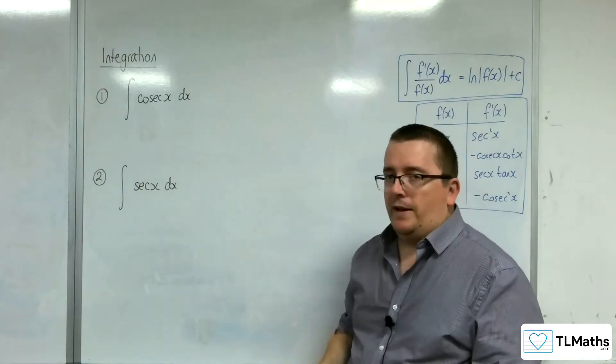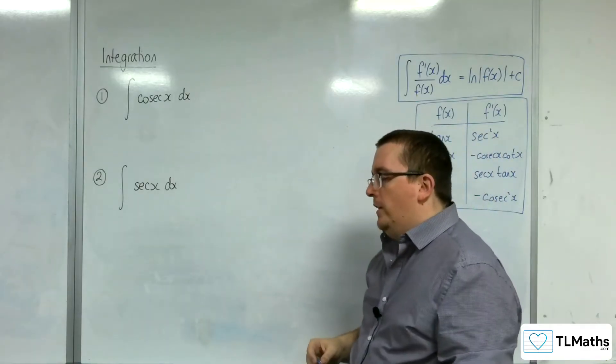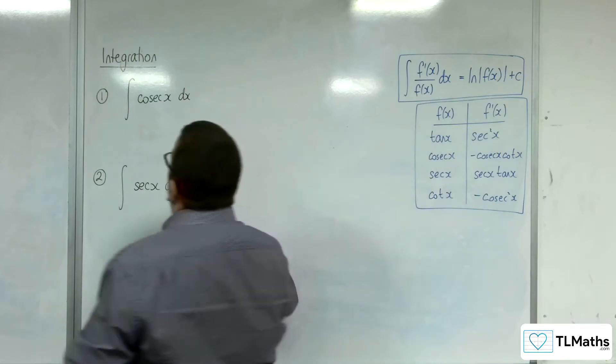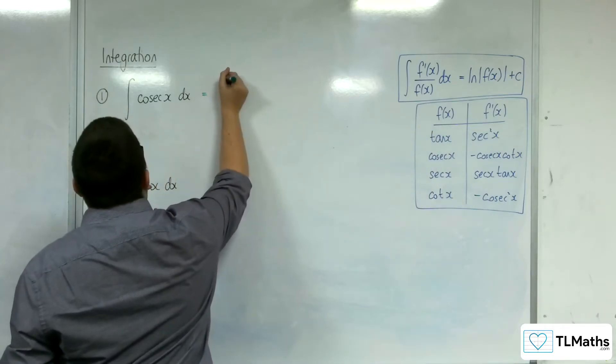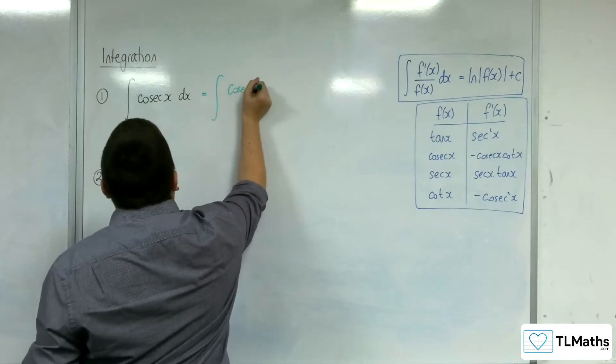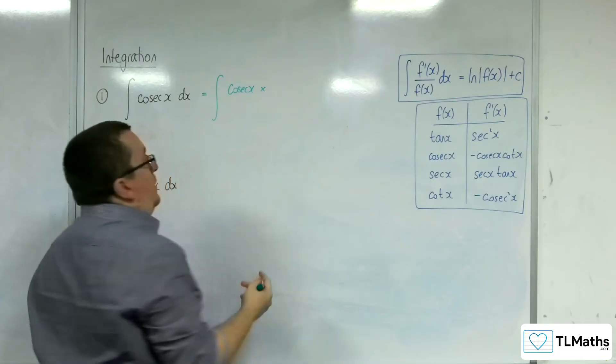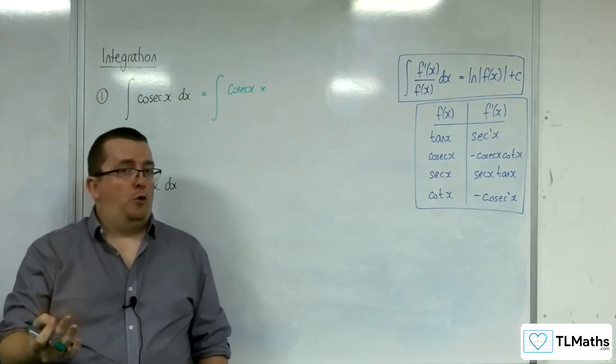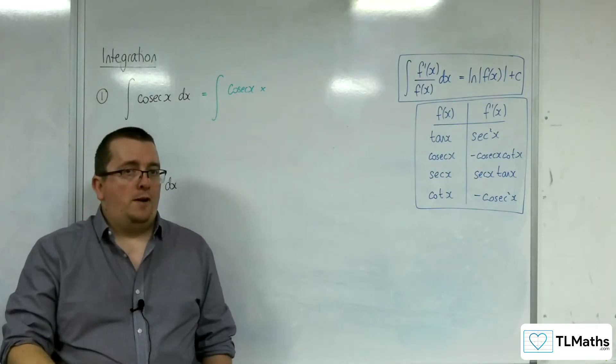We're going to integrate cosec dx. Now, what we're going to do is we're actually going to multiply the cosec by one. The only thing is that I am, in doing so, going to choose what format the one takes.